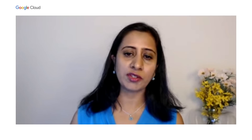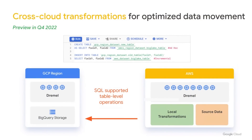We're also building features for cross-cloud transformations. You can run an ad-hoc query in AWS S3, perform local transformations, and create a table directly in the BigQuery region — all using SQL. With your data now available in BigQuery, you can join it with any other GCP data. We are continuing to invest heavily in this space, including capabilities such as cross-cloud materialized views. We know that a seamless way to do cross-cloud analytics is very important to you.